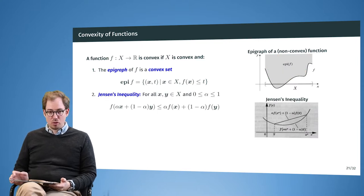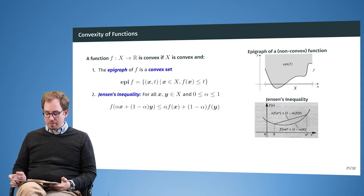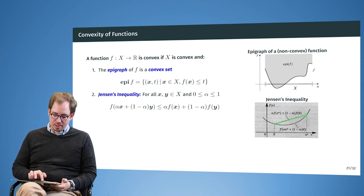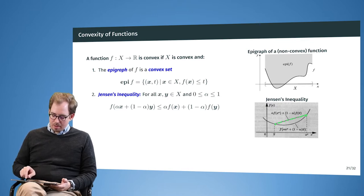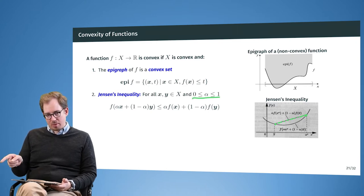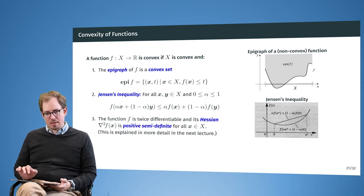An equivalent requirement is Jensen's inequality, where we require that the line segment drawn between two points on the function lies above the function. Here we have two points x and y on the function, and the line segment between them must be above the center point between x and y. We can freely choose any alpha to pick any point between x and y, and the line segment always has to be above that point.